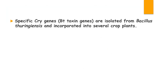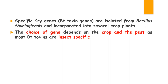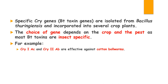Specific cry genes are isolated from Bacillus thuringiensis and incorporated into several crop plants. We choose the gene from the bacteria depending on the crop and the pest, as Bt toxins are insect-specific. For example, cry1ac and cry2ab are effective against cotton bollworms, whereas cry1ab is effective against corn borers. Remember students, this is extremely important for your exam. Please remember the names of the genes.